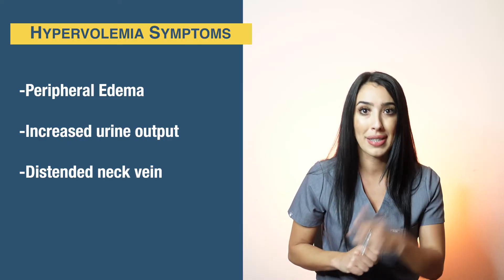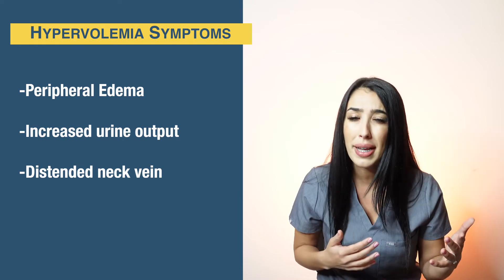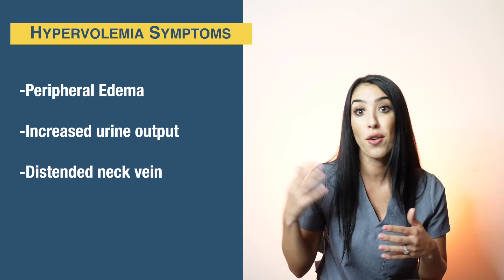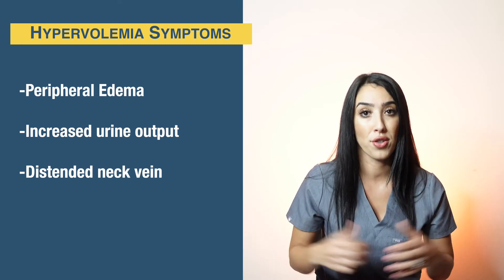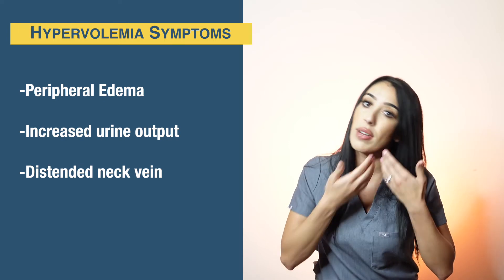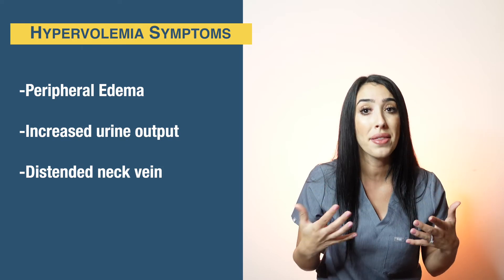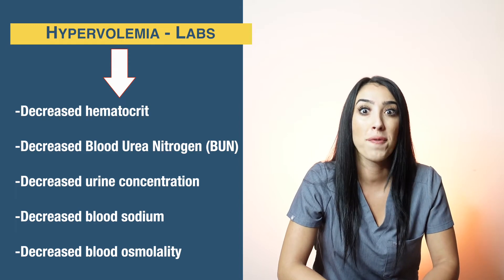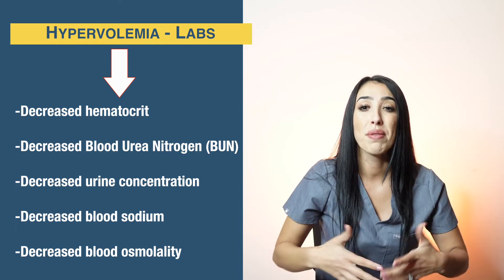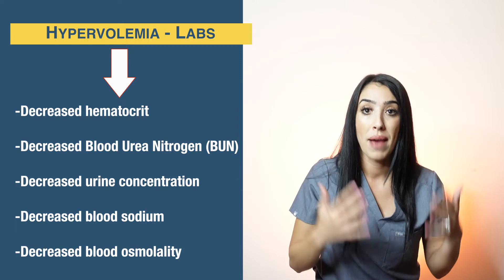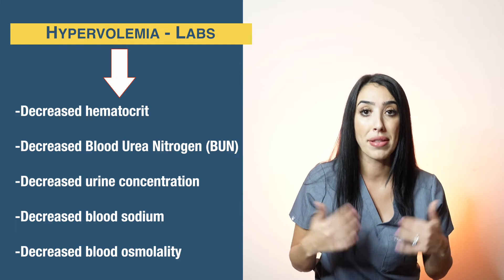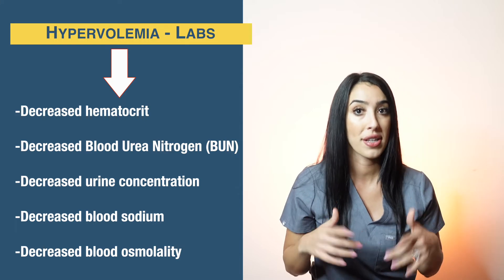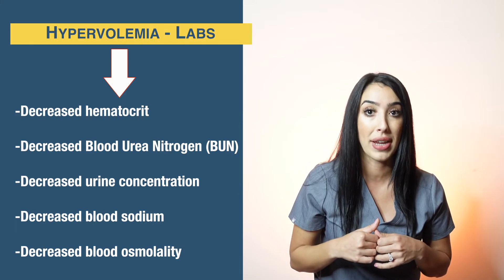Other signs include peripheral edema — we assess whether it is pitting or non-pitting edema and grade it as plus one, plus two, plus three, or plus four. Patients will also have increased urine output and distended neck veins. For labs, think that everything goes down because the blood is more diluted: hematocrit and hemoglobin decreased, blood osmolarity decreased, urine sodium decreased, BUN decreased, and urine specific gravity decreased.